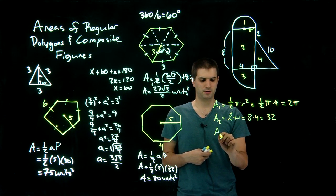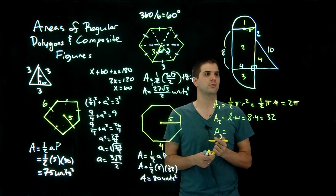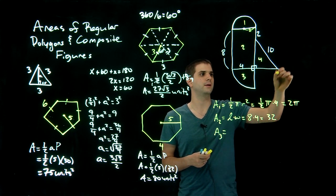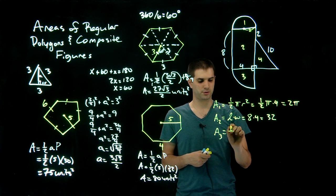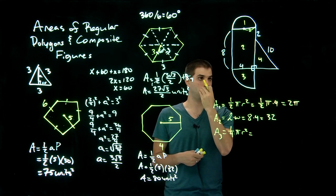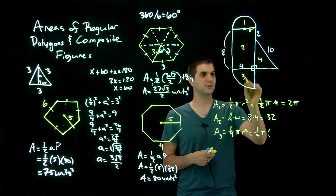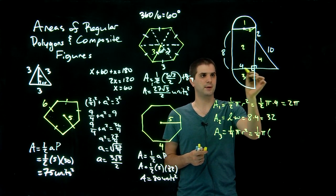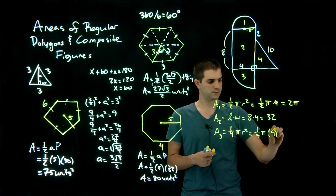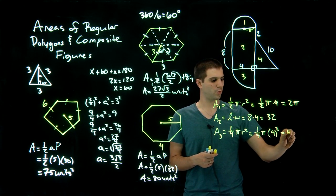The area of shape 3 is a quarter circle. The area of a quarter circle is one-fourth pi r squared. The radius this time is 4, so we get one-fourth times pi times 4 squared, which is 16. A quarter of 16 is 4, so this equals 4pi.